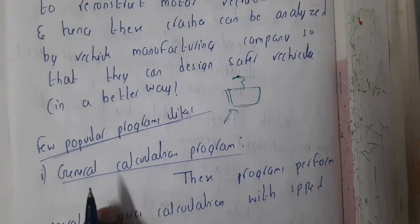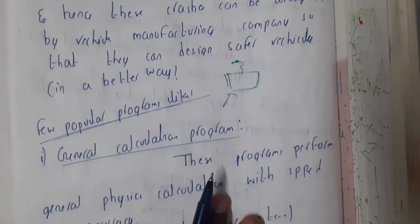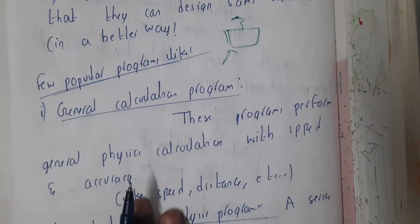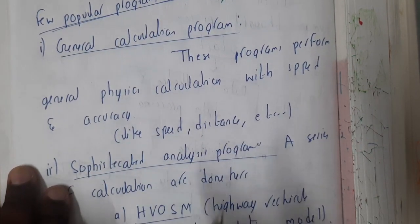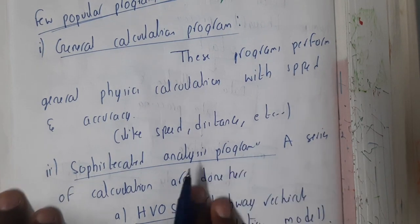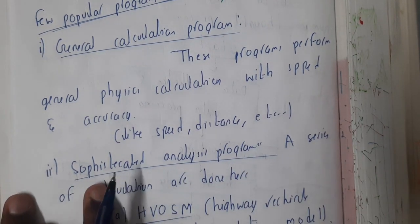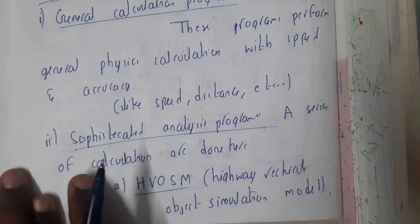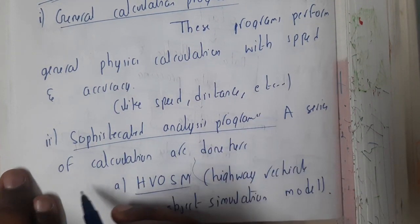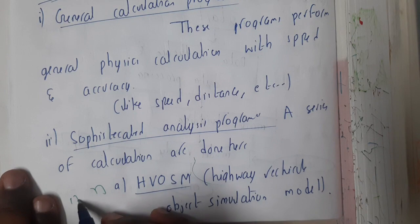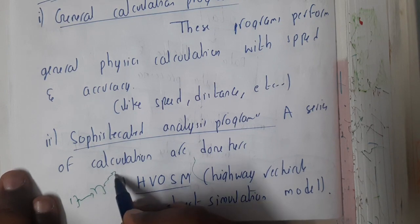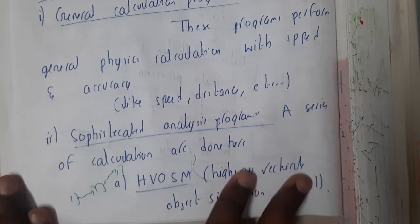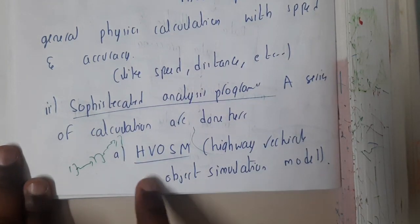A few popular programs used for this are: first, the General Calculation Program, which performs general physics calculations with speed and accuracy — covering parameters like speed, distance, and other physics operations. Similarly, sophisticated analysis of problems involves a series of calculations where each step depends on the previous one, building progressively toward a solution.